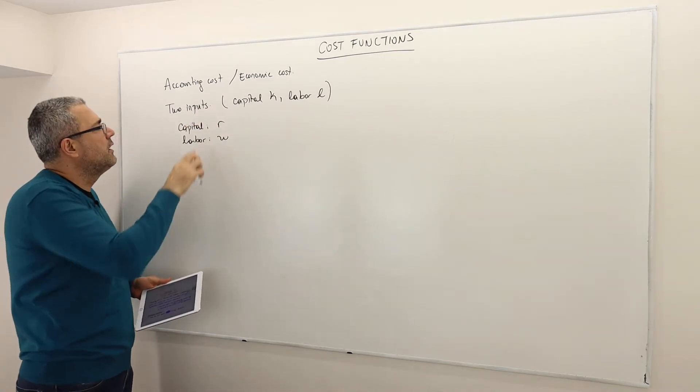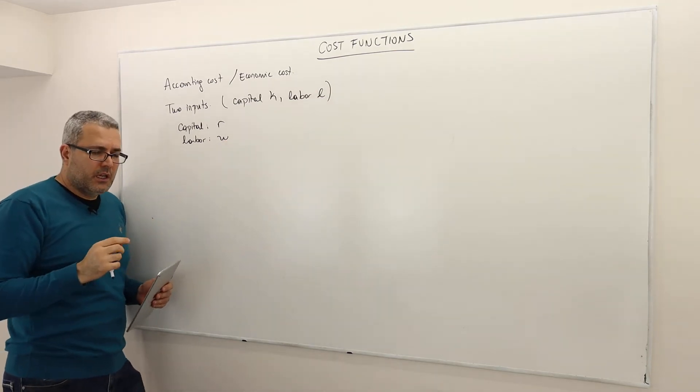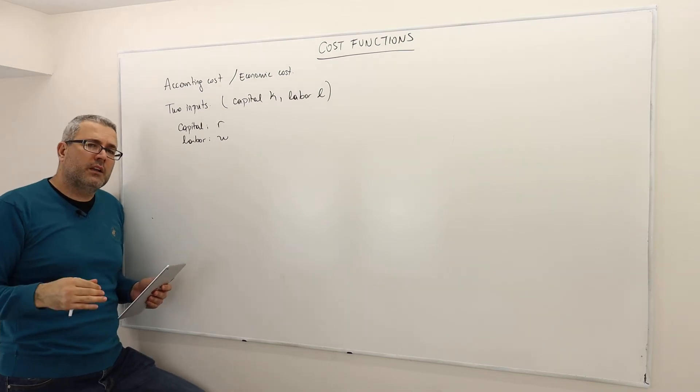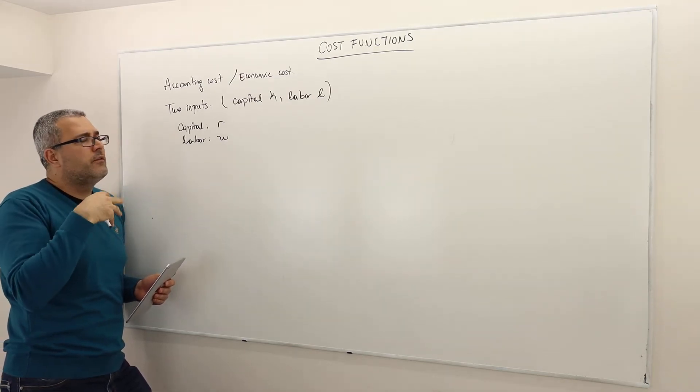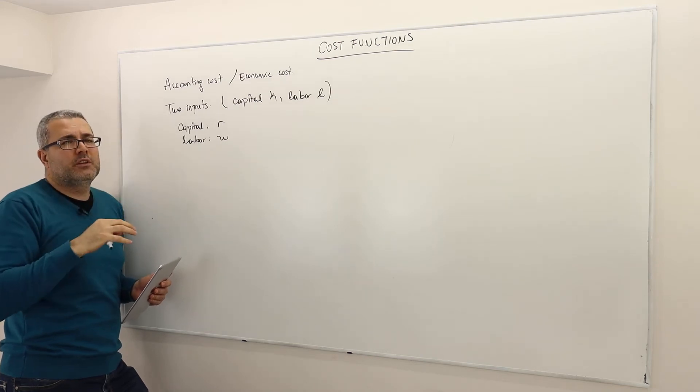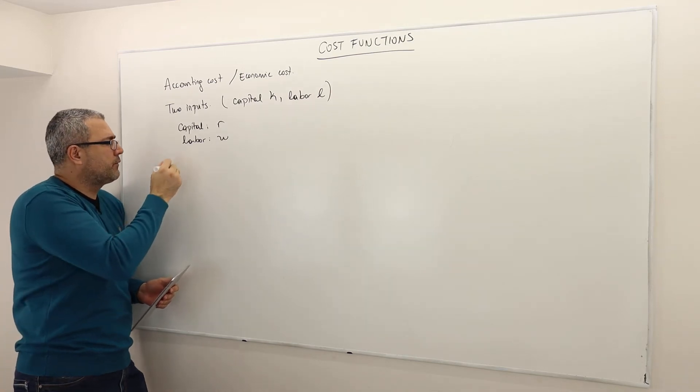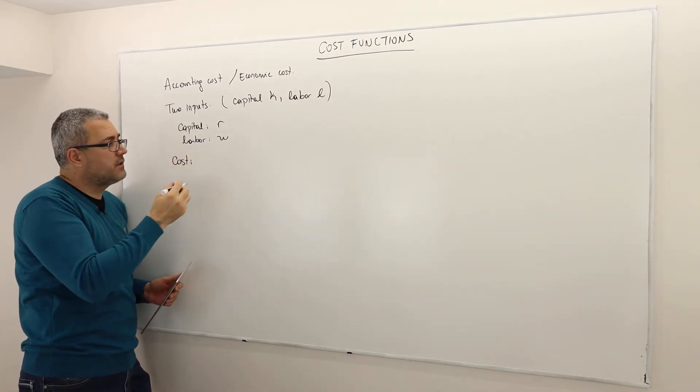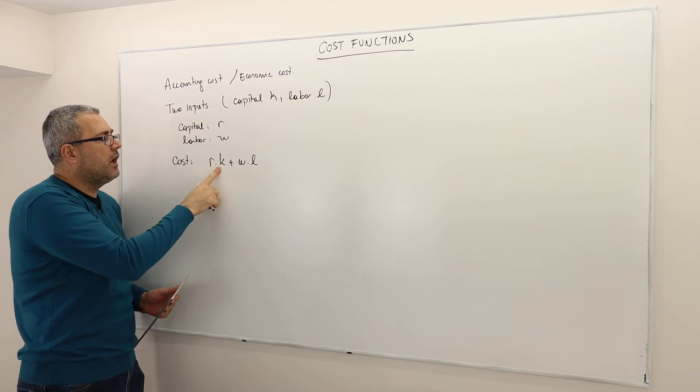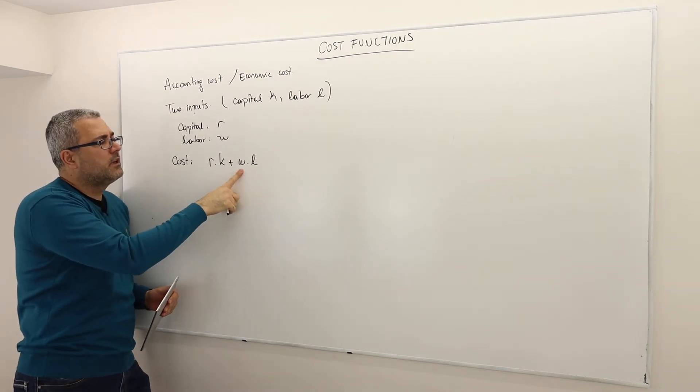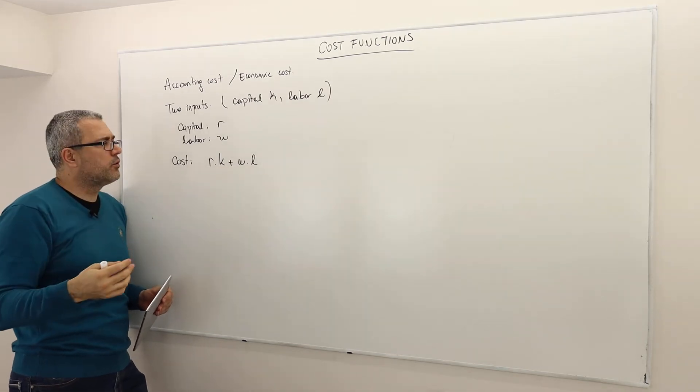So again, the inputs are not free. Each input has a price. R is the price of capital, W is the price of labor. So the producer is kind of consumer in input market. As a producer, you demand capital, you demand labor. And if you want to consume certain levels of capital and labor, you have to pay those prices. So your expenditure, or your cost, is going to be very simple: R times K plus W times L.